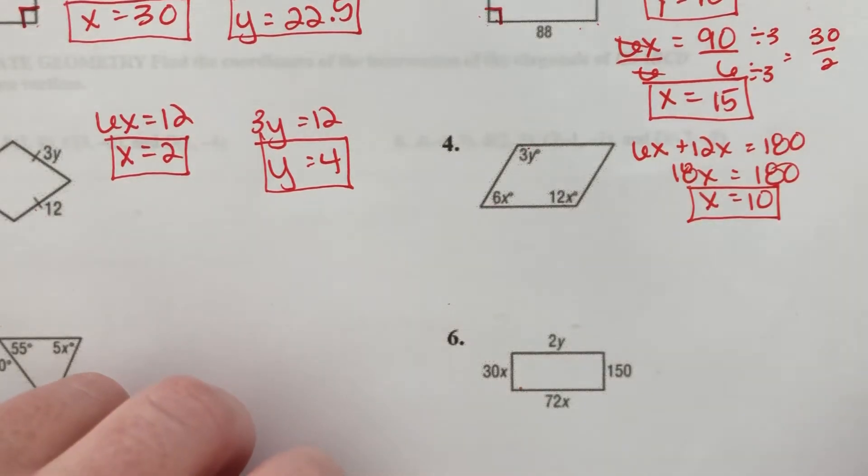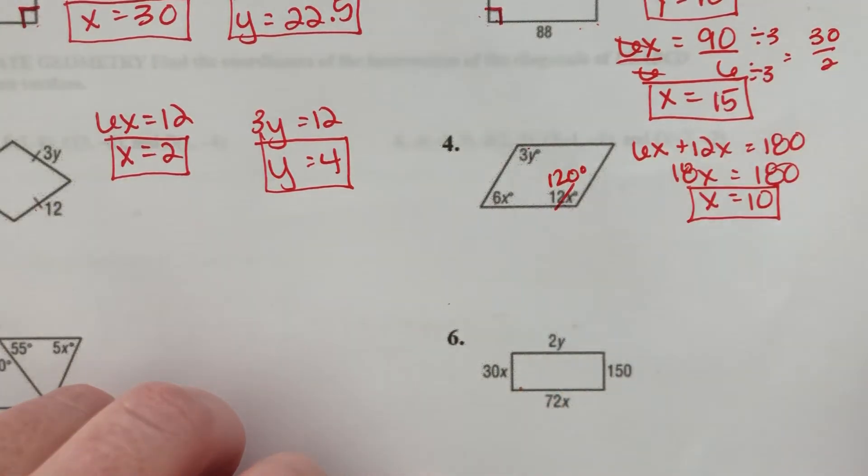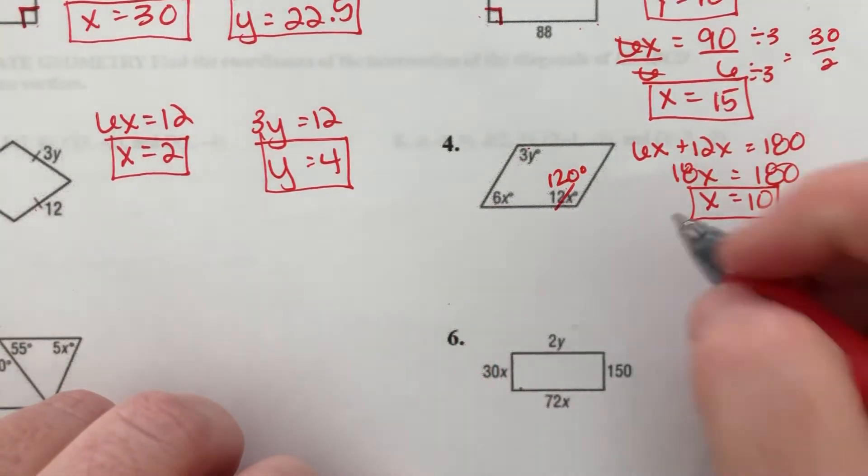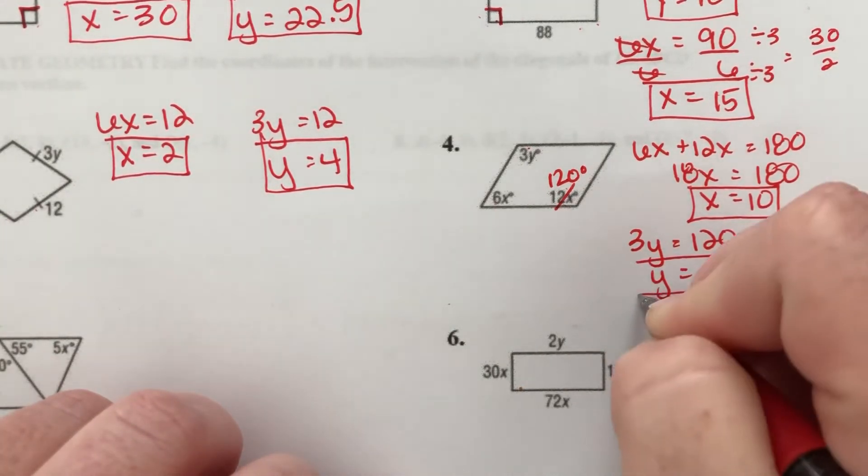That's 18x equals 180, so x has to equal 10. Once I know x equals 10, then I know that this is 120 degrees. So I know 3y has to equal 120. And then divide both sides by 3, so y has to equal 40.